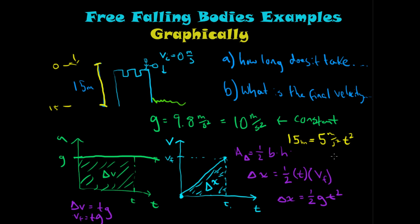So: 15 meters equals one half times g (5 m/s²) times t squared. Dividing both sides by 5 gives t² = 3, so t equals the square root of 3, which is about 1.73 seconds. We just calculated that not even with equations, just from the understanding that acceleration is constant and the area under the velocity graph is displacement.